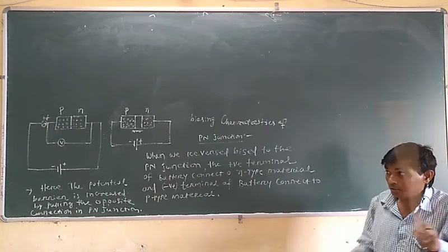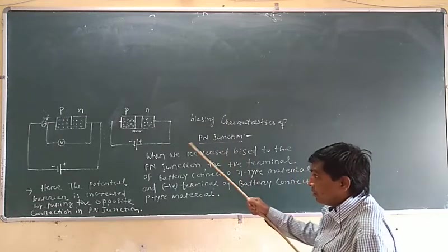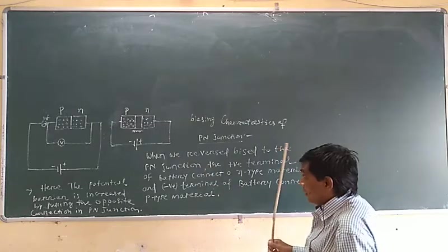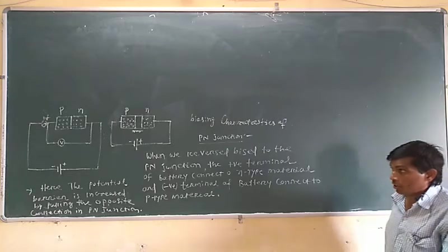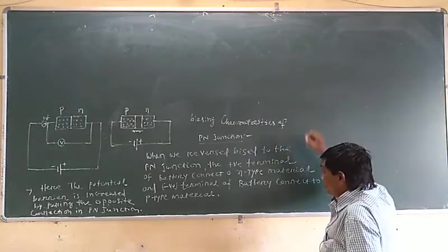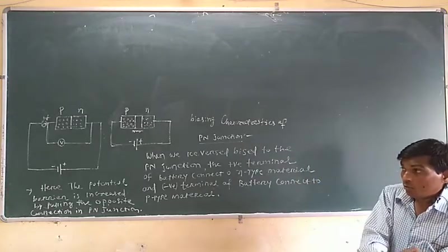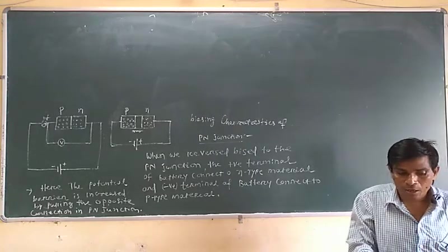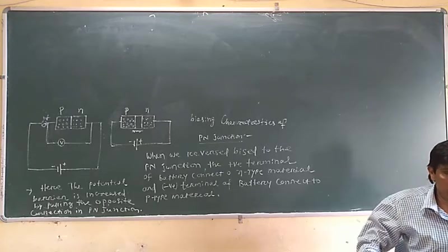Hello students. We discussed the connection of a biasing PN junction diode and drew its characteristic curve in reverse condition. In drawing the reverse connection characteristics curve, we take the voltage on the X axis and the current along the Y axis in a reverse direction.